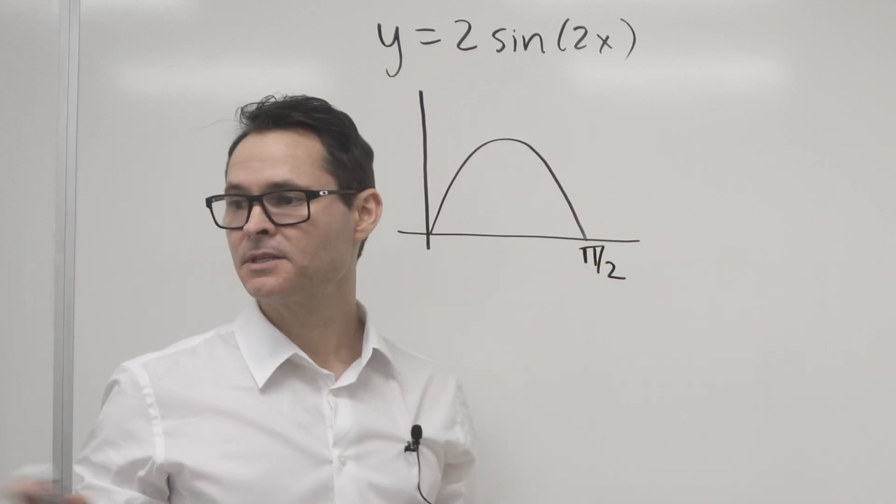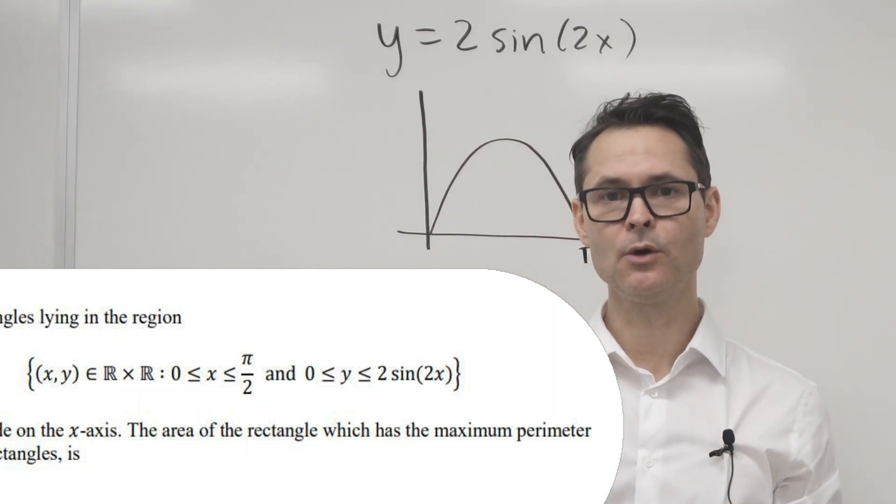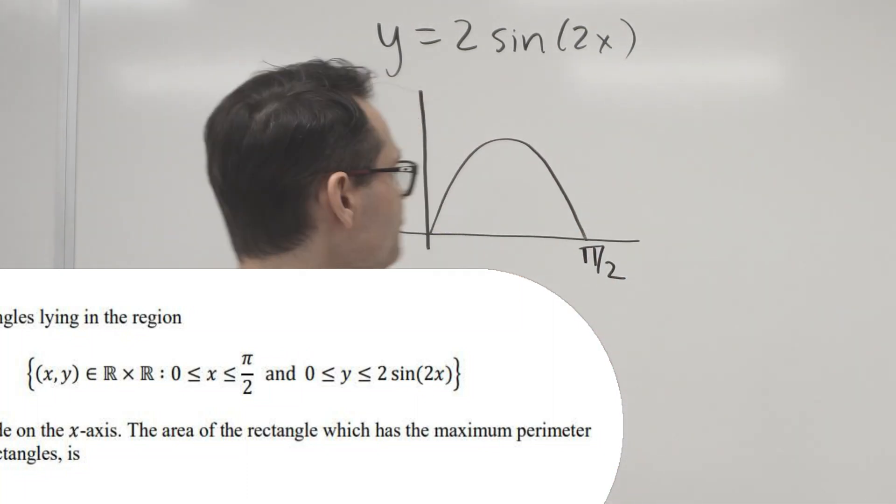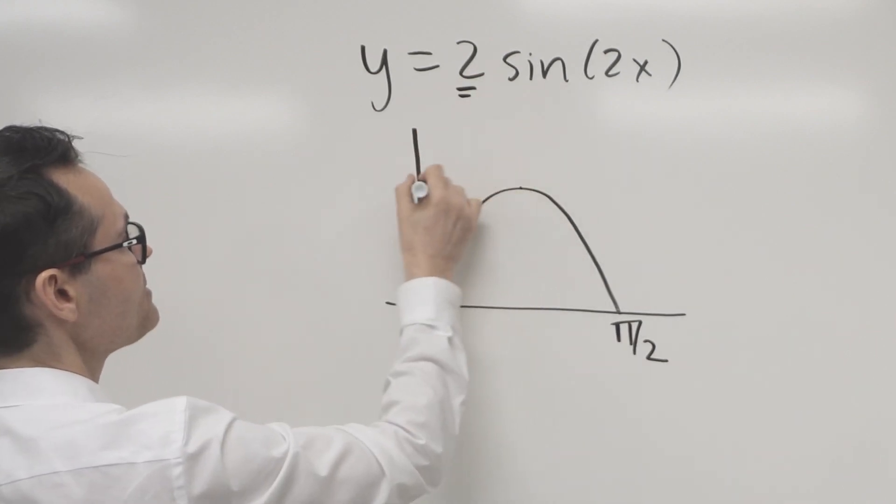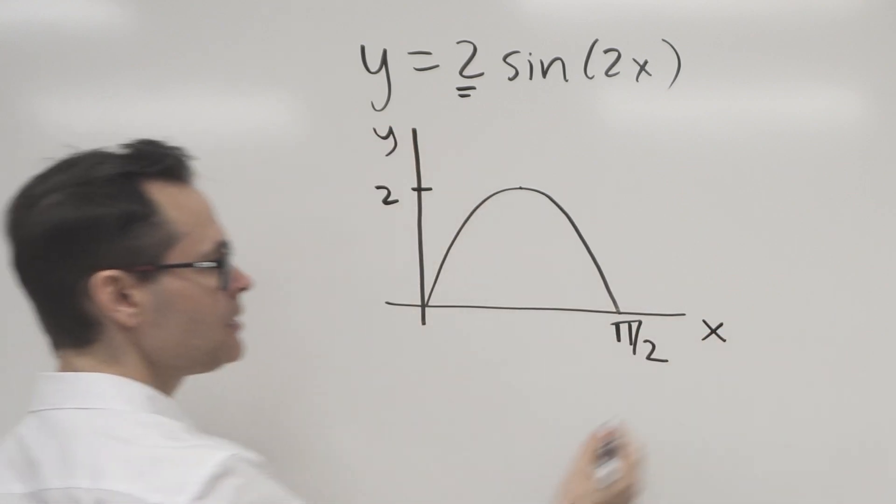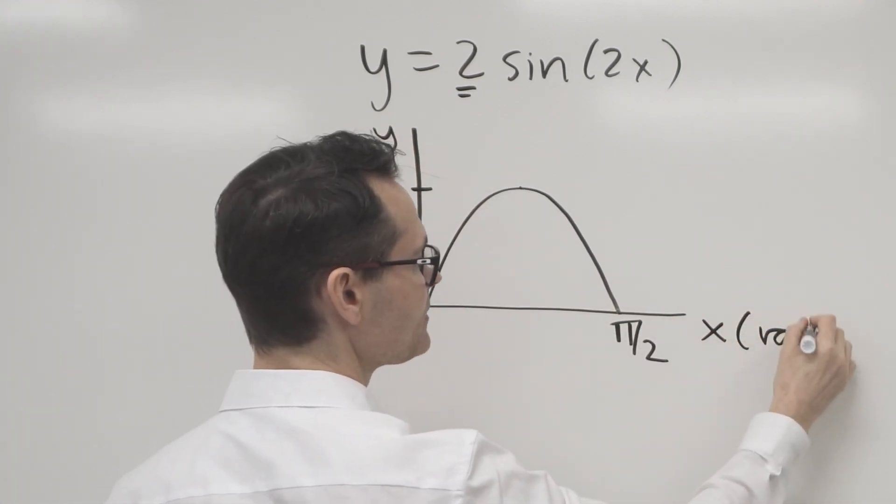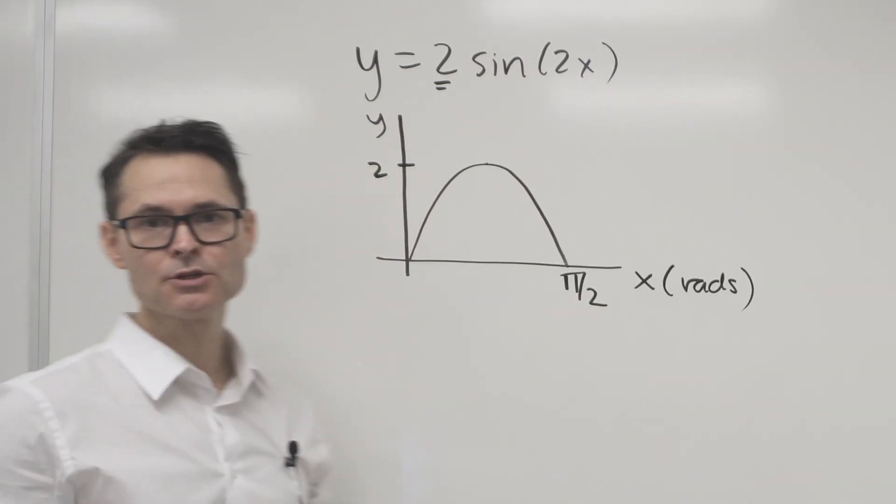And they are specifically saying they only want the region between zero and pi over two. Also there's a vertical stretch, so that means it maximizes at two. So there's your x and there's your y. Just remembering this is in radians, it's an angle measure, and that's your ratio measured along the vertical.